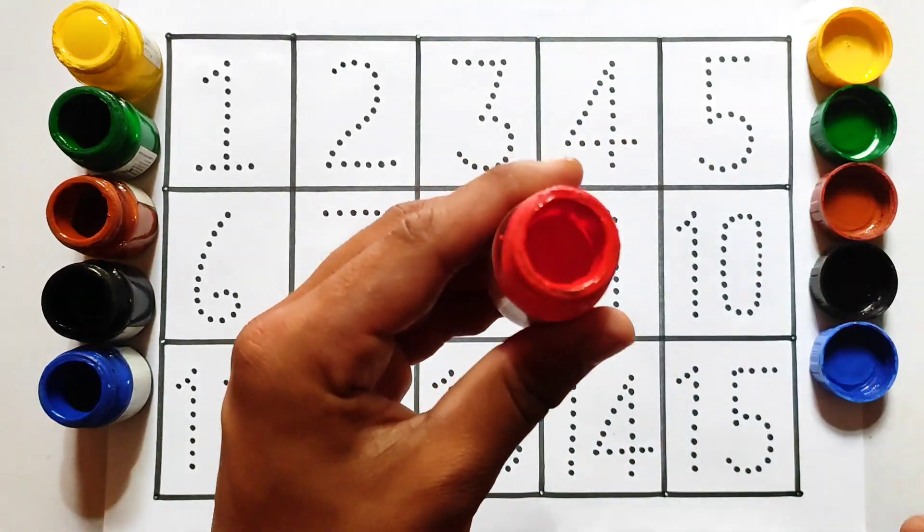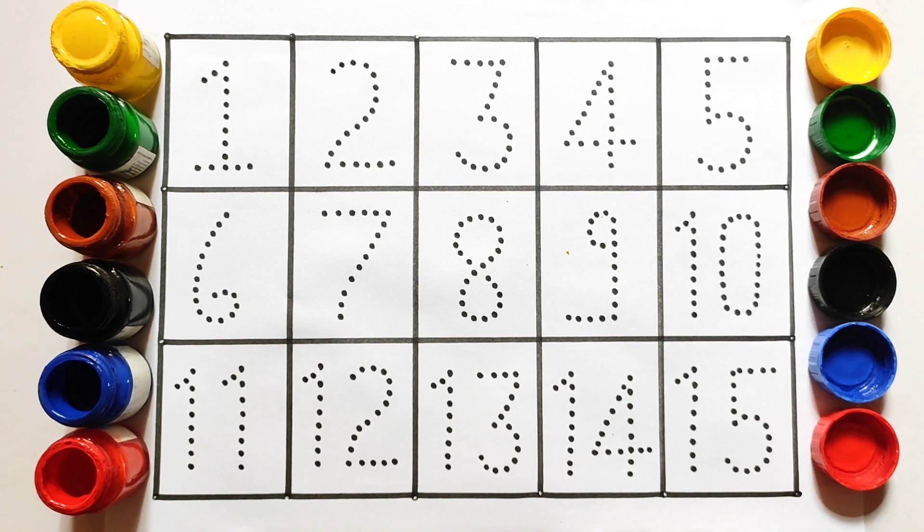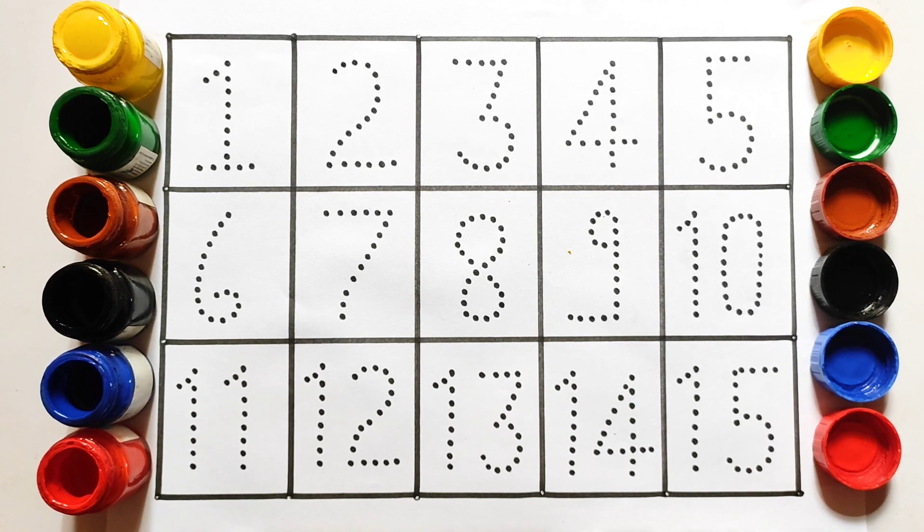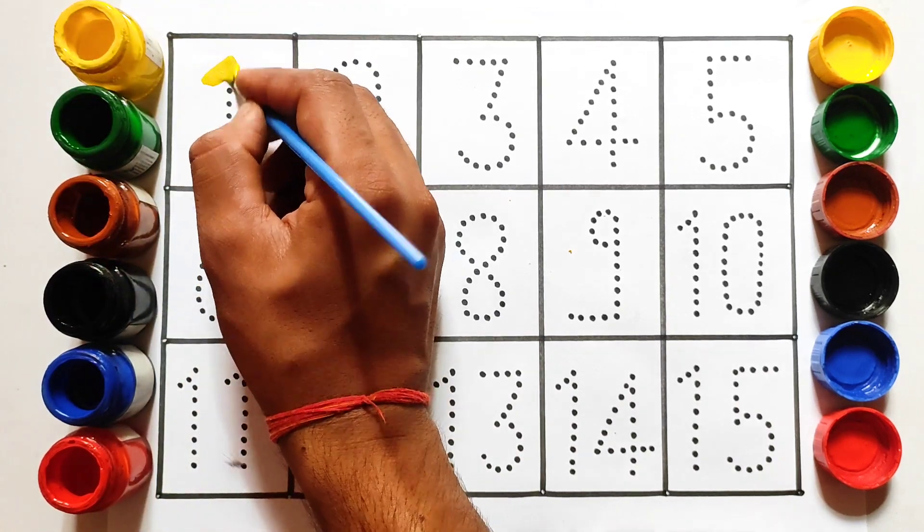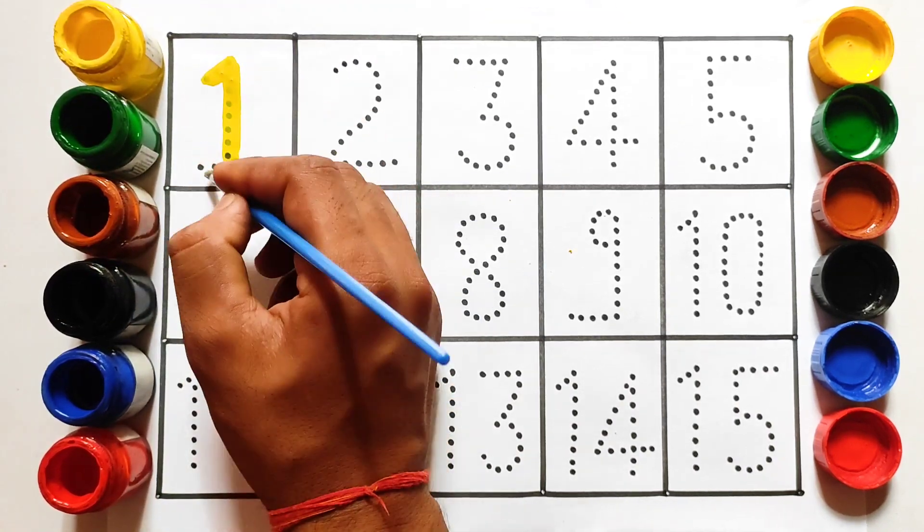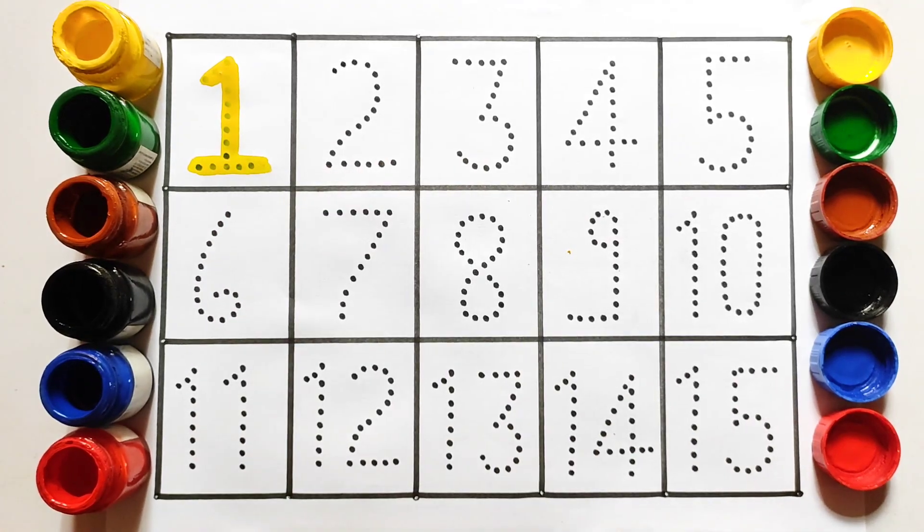This is blue color, blue color. And this is red color, red color. Let's start drawing kids. 1, O-N-E, 1.